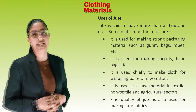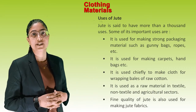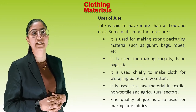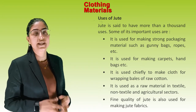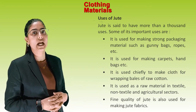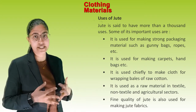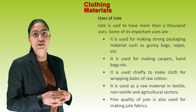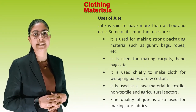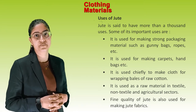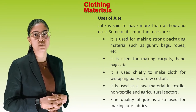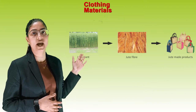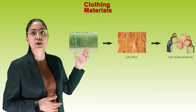Uses of Jute: Jute is said to have more than a thousand uses. It is used for making strong packing materials such as gunny bags and ropes, and for making carpets and handbags. It is used chiefly to make cloth for wrapping bales of raw cotton, and serves as a raw material in textile, non-textile and agricultural sectors. Jute fibre is also used for making jute fabrics. See these pictures of the jute plant, jute fibre, and jute-made products.